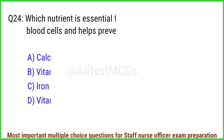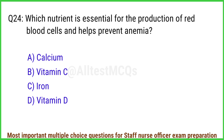Q24. Which nutrient is essential for the production of red blood cells and helps prevent anemia? The right answer is option C: Iron.